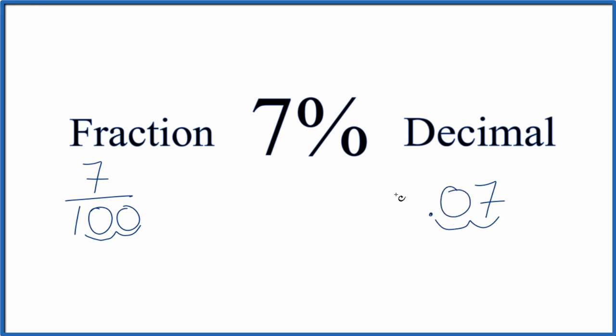Put our zero here. And often you'll see a zero in front. So 7 divided by 100 is 0.07. And that's what we found on our calculator.